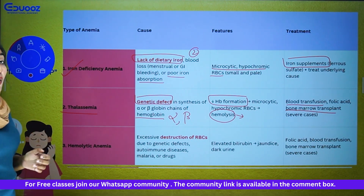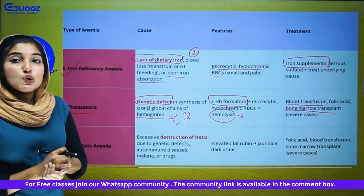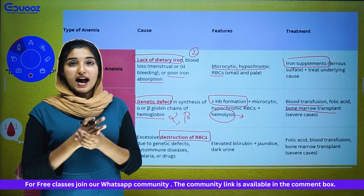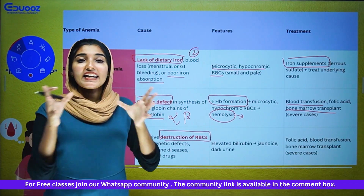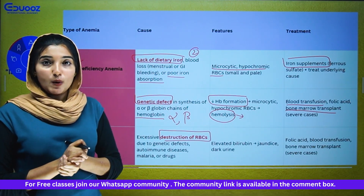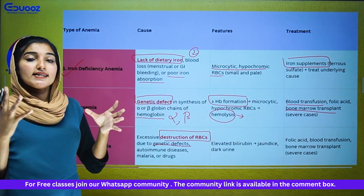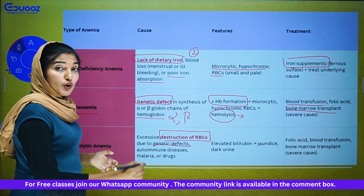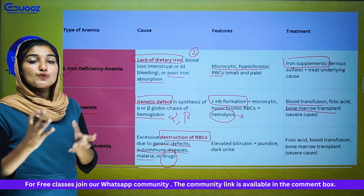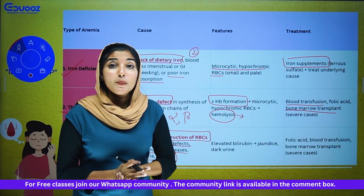Now let's talk about hemolytic anemia. Hemolytic anemia is excessive destruction of RBC. In our body, RBC is excessively destructed — broken, ruptured. The causes include genetic defect, autoimmune disease, malaria, and certain drugs which destroy our RBC.